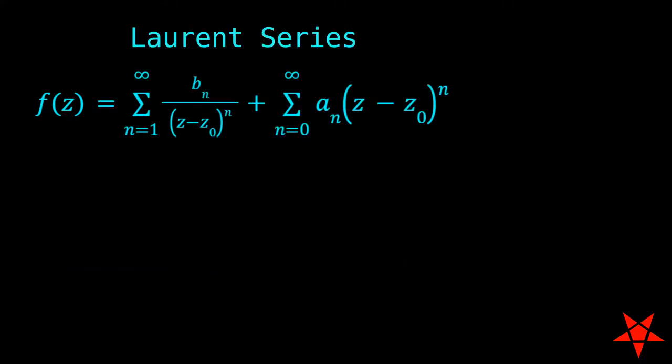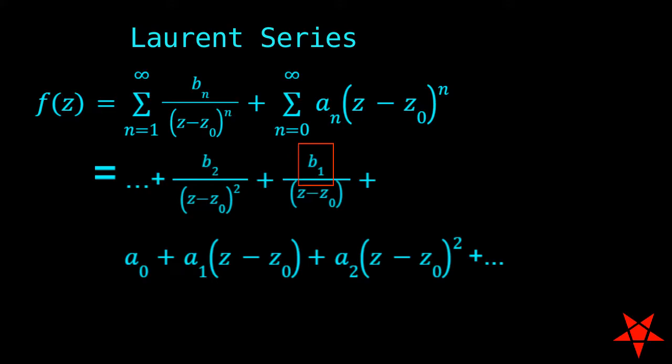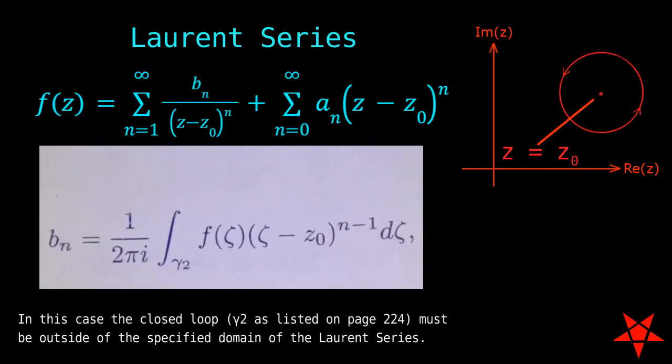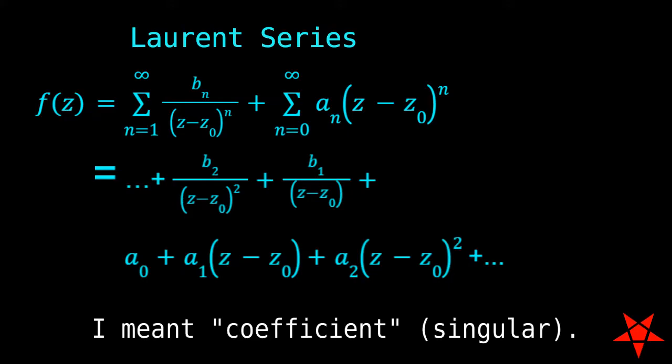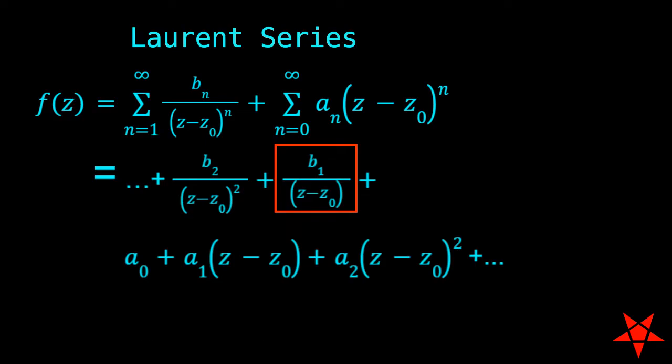So for Laurent series, the residue equals the b sub 1 coefficient, which can be determined either by integration over the aforementioned path or by calculating the Laurent series and inspecting the coefficients for the 1 over z minus z naught term. In all four cases in this episode, we will be obtaining the residue in question via the latter option by first calculating the Laurent series.